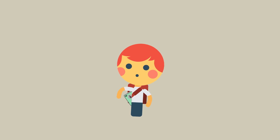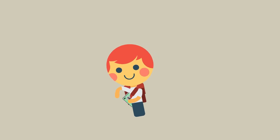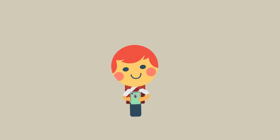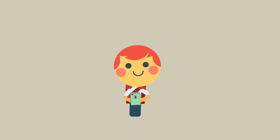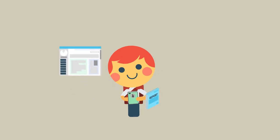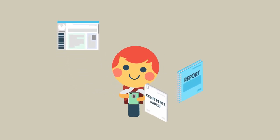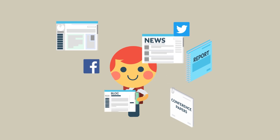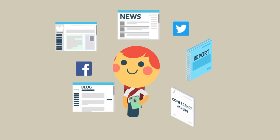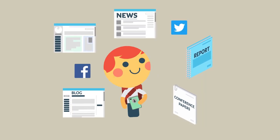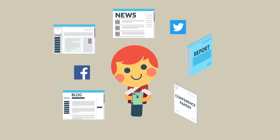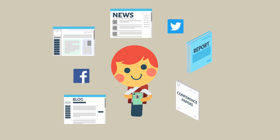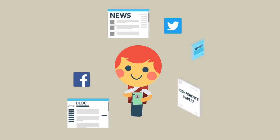If you need very current information, a book or journal article might not be appropriate. Sometimes other sources are better for discovering very recent or new research. Emerging research is often reported at conferences, in reports and in the news and social media before it is published in books or journals.